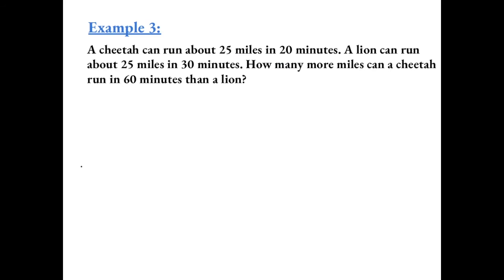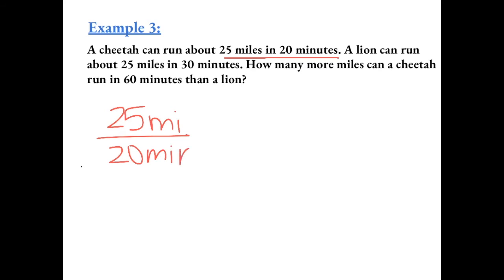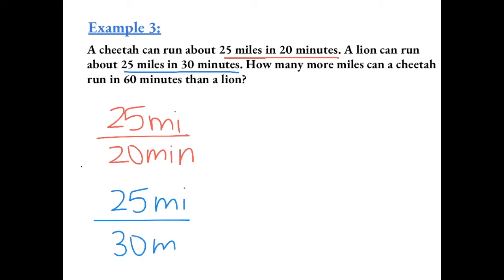Example 3: A cheetah can run about 25 miles in 20 minutes — we can write this as the fraction 25 miles over 20 minutes. A lion can run about 25 miles in 30 minutes. About how many more miles can the cheetah run in 60 minutes than a lion?